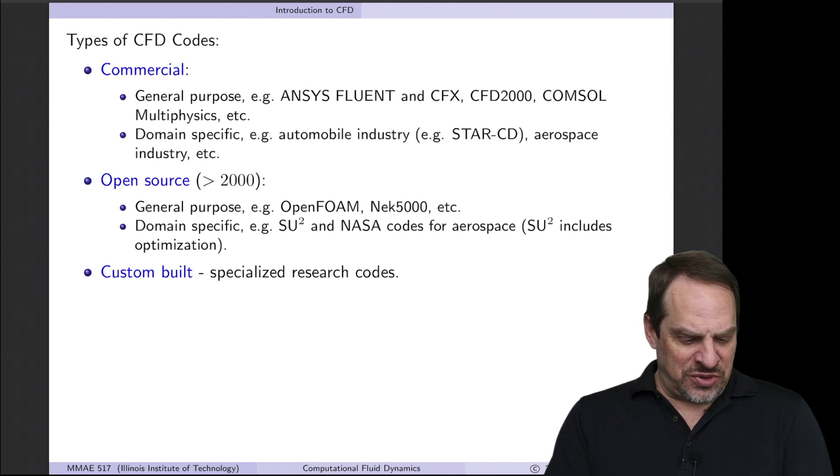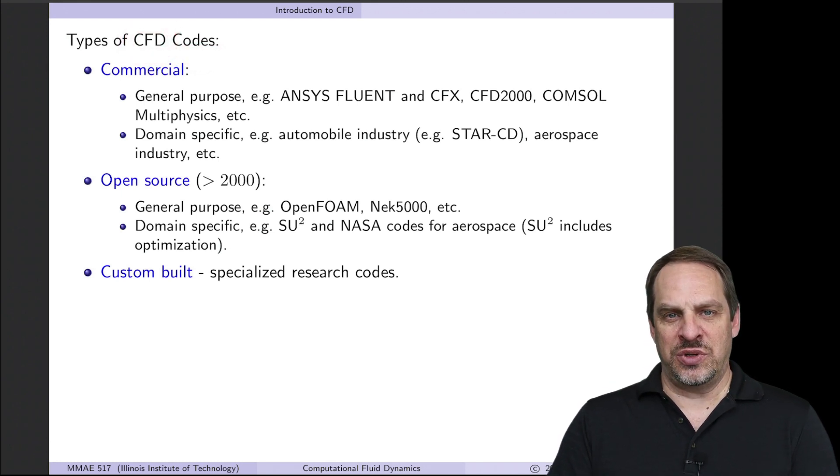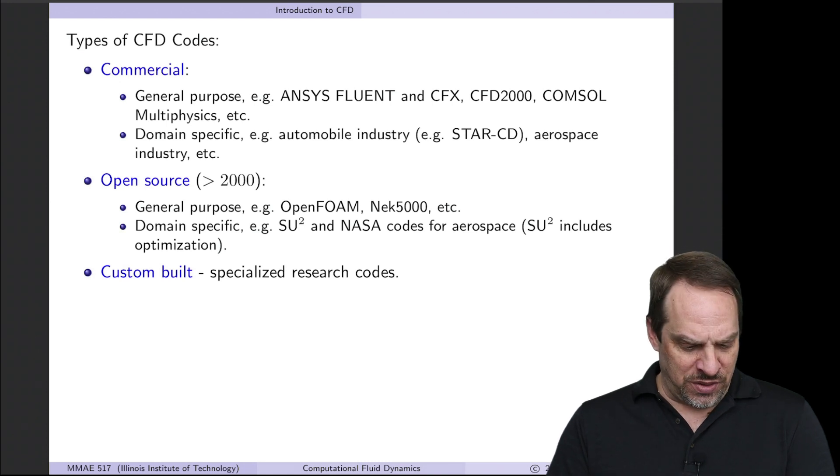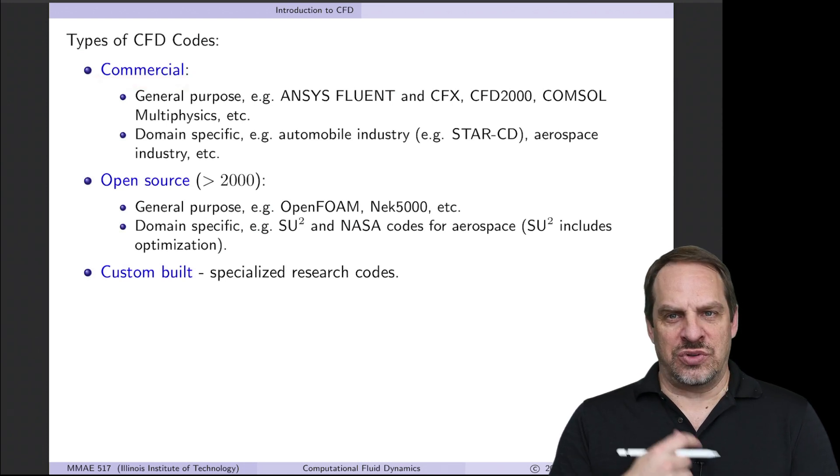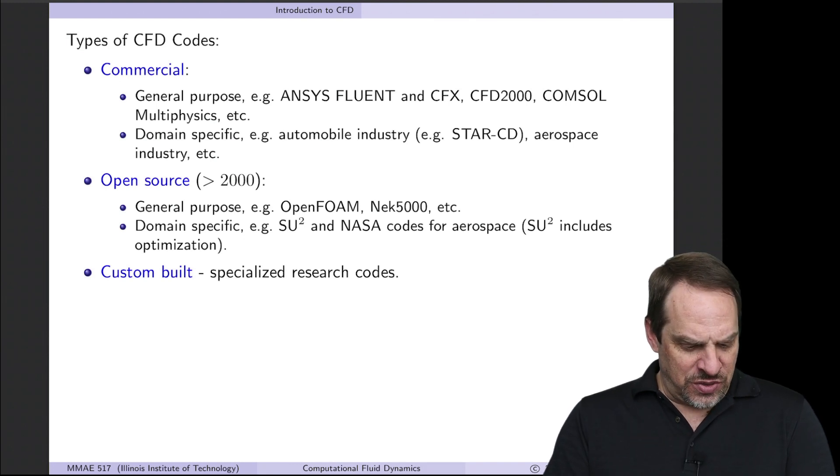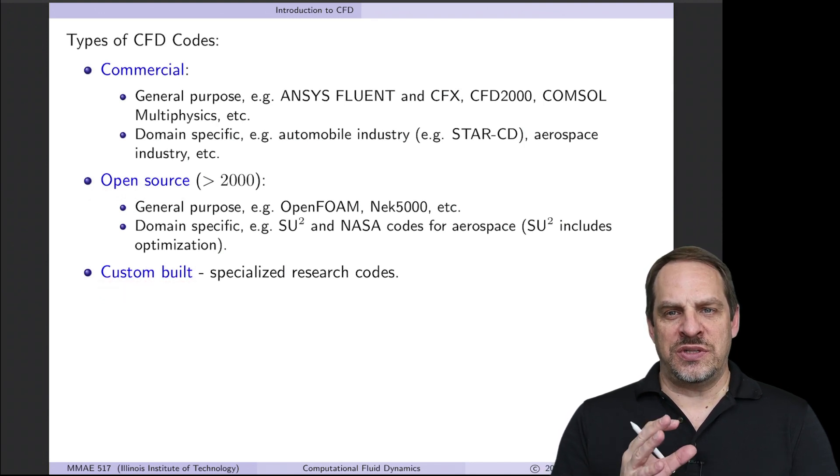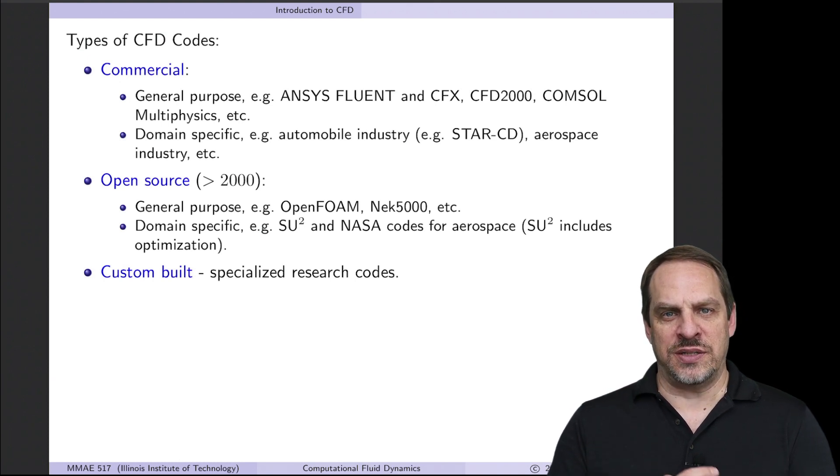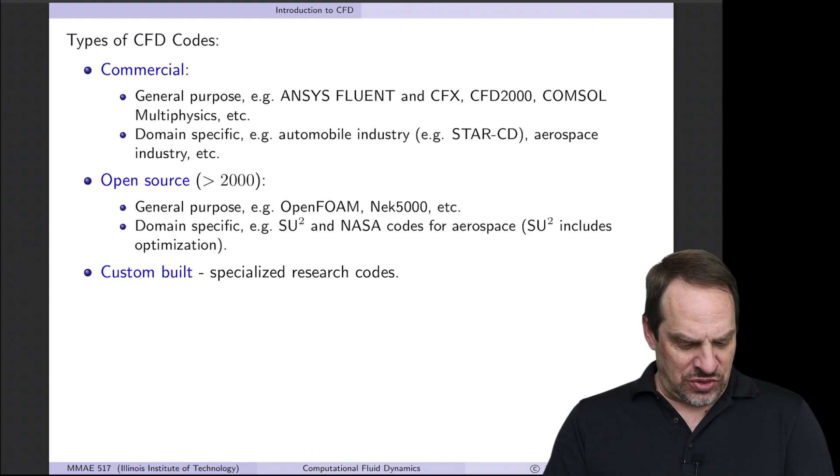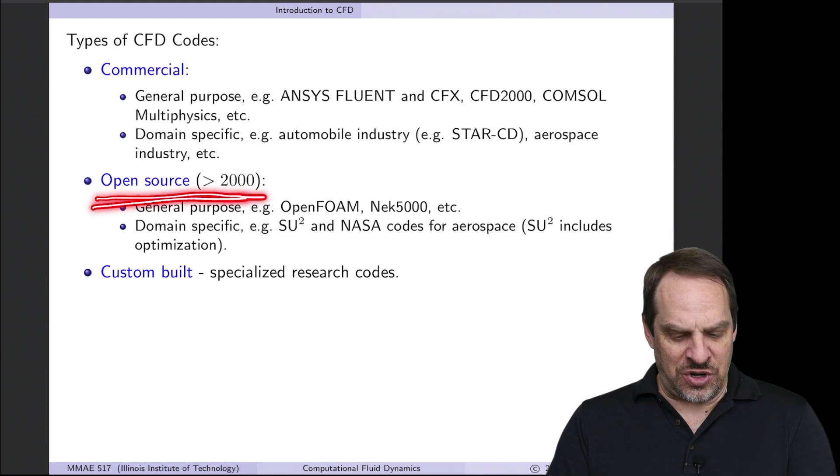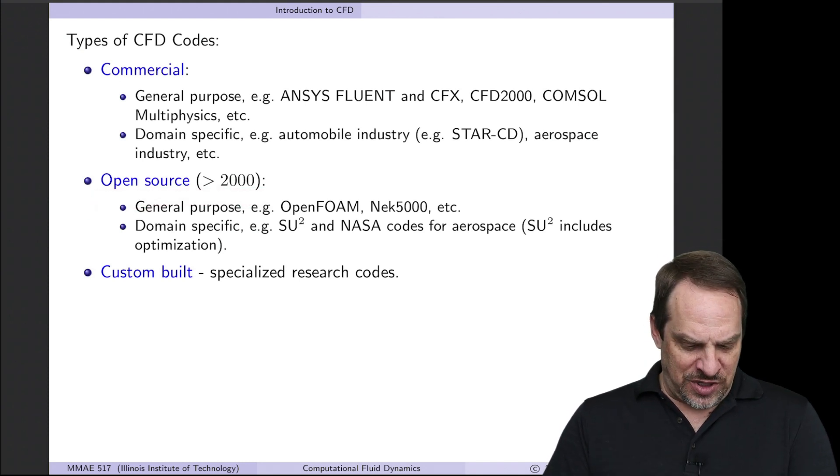There are really three types of codes, and again, just like in the last video, I'm going to talk in terms of CFD, computational fluid dynamics, but the same is true for other areas. There are commercial codes, which are developed by companies and sell for lots of money to make a profit. There are open source codes, and then there are custom built codes. All three have evolved over time, and when I was a graduate student, the open source movement hadn't even started yet.